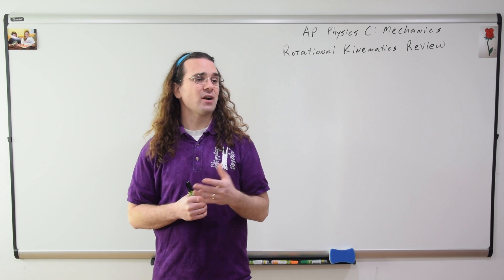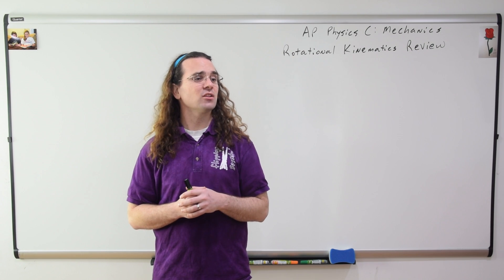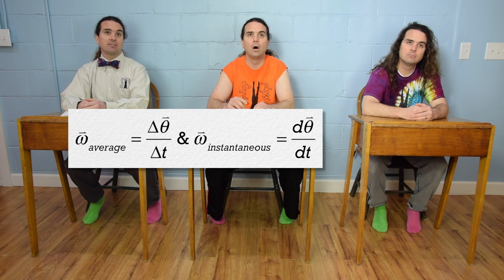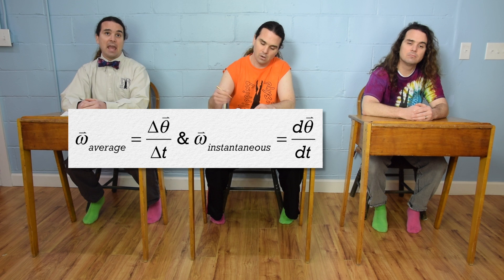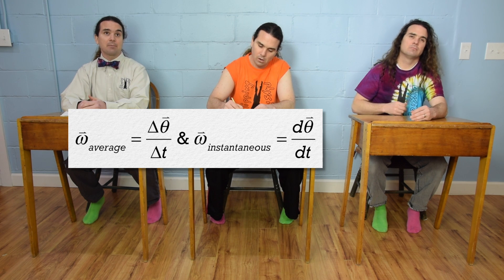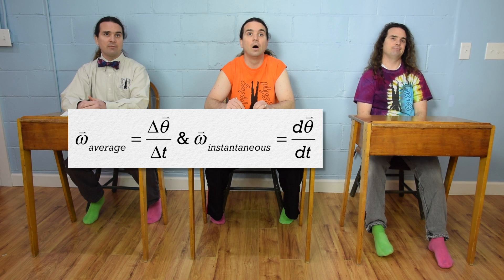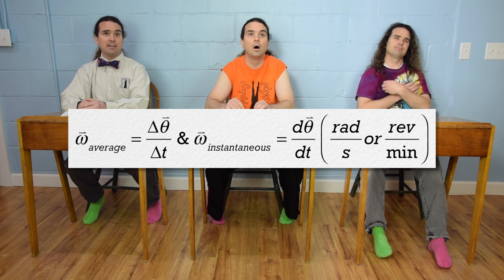Billy, what are the equations for average and instantaneous angular velocity? The symbol for angular velocity is the lowercase Greek letter omega and it looks like a curly w. Average angular velocity equals the change in angular position over change in time, and instantaneous angular velocity equals the derivative of the angular position with respect to time. The units for angular velocity are usually radians per second when we use them in physics.